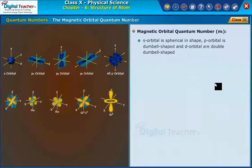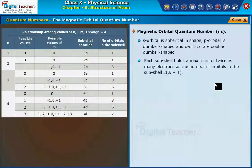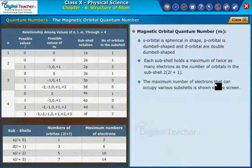S orbital is spherical in shape. P orbital is dumbbell shaped and d orbital are double dumbbell shaped. Each sub-shell holds a maximum of twice as many electrons as the number of orbitals in the sub-shell, 2 into 2l plus 1. The maximum number of electrons that can occupy various sub-shells is shown on the screen.